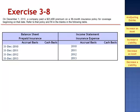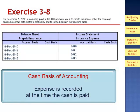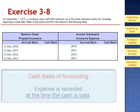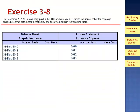Let's do the cash basis first. Under the cash basis of accounting, an expense is recorded when the cash is paid. The amount of any future coverage is not recorded as prepaid insurance. So on the balance sheet under the cash basis, prepaid insurance would be zero. And on the income statement, all $23,400 would be expensed in 2010, the period in which the payment is made.